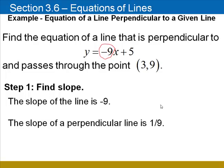Perpendicular lines have slopes that are negative reciprocals. Changing the sign to a positive, the reciprocal is 1 ninth, so the slope of a perpendicular line will be 1 ninth.